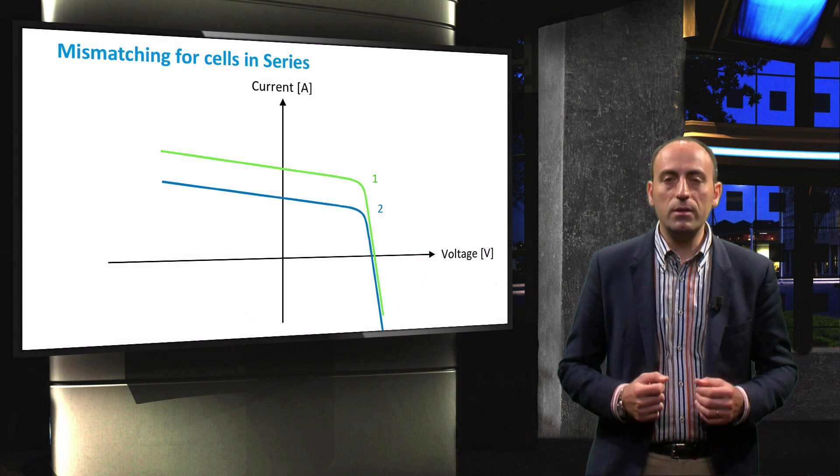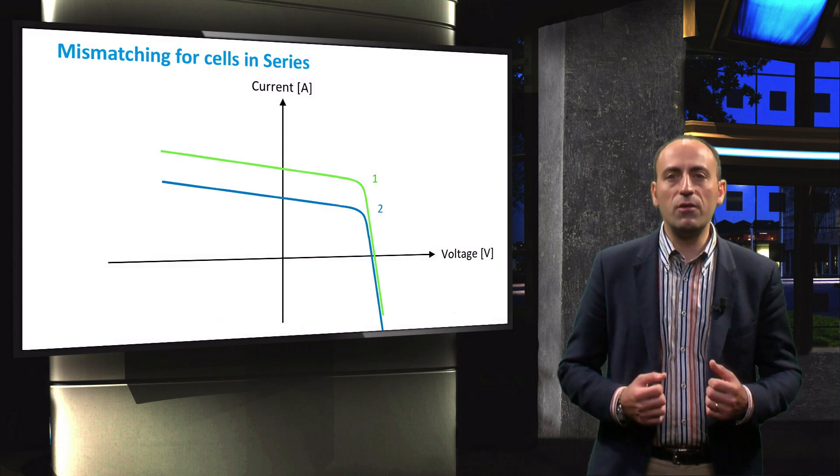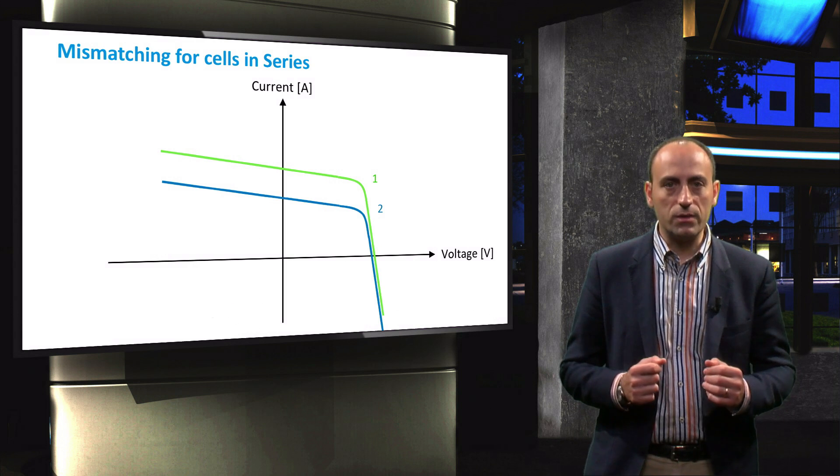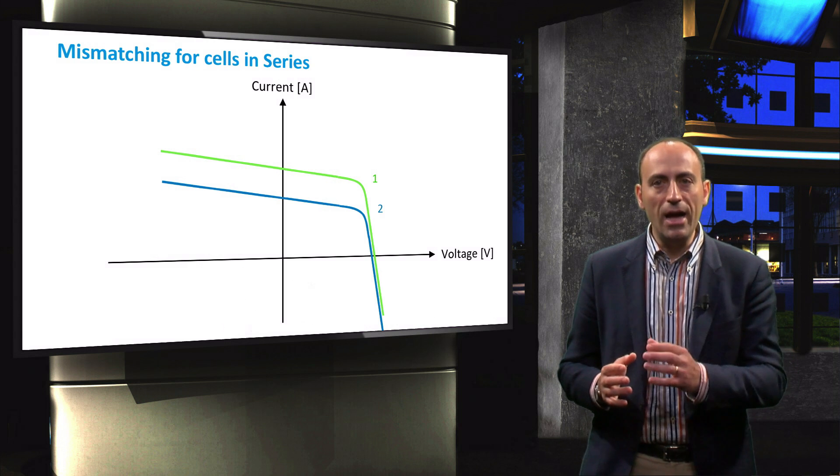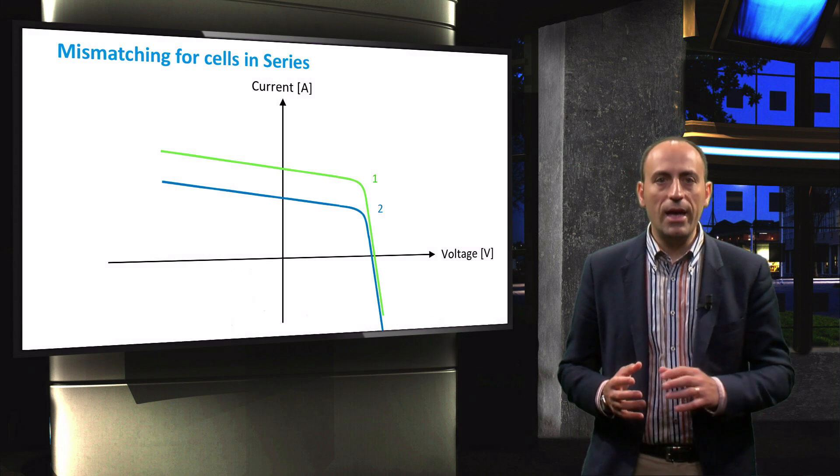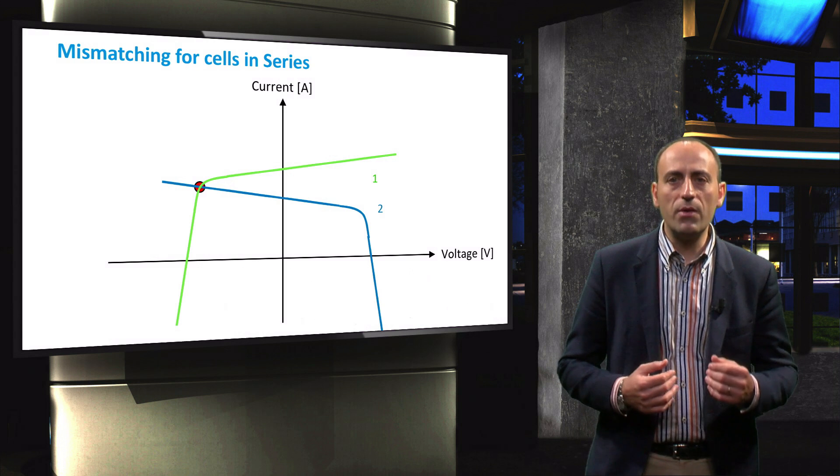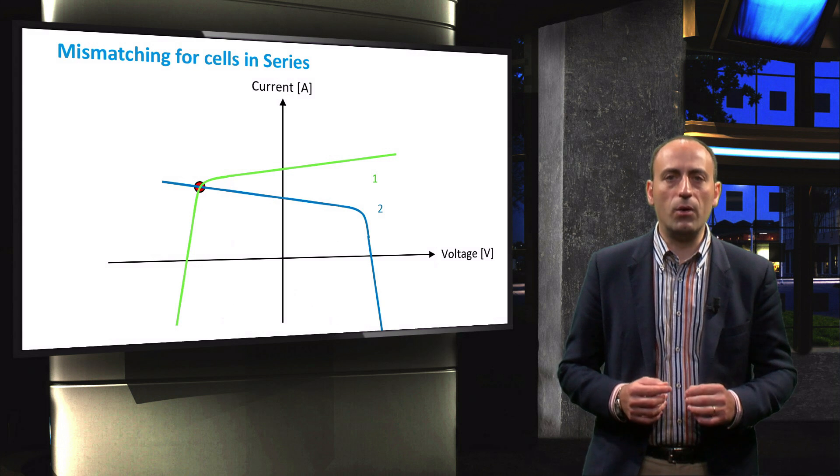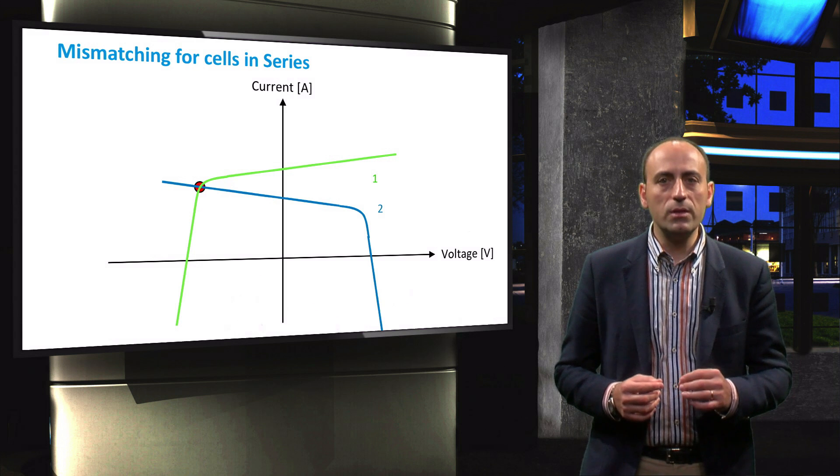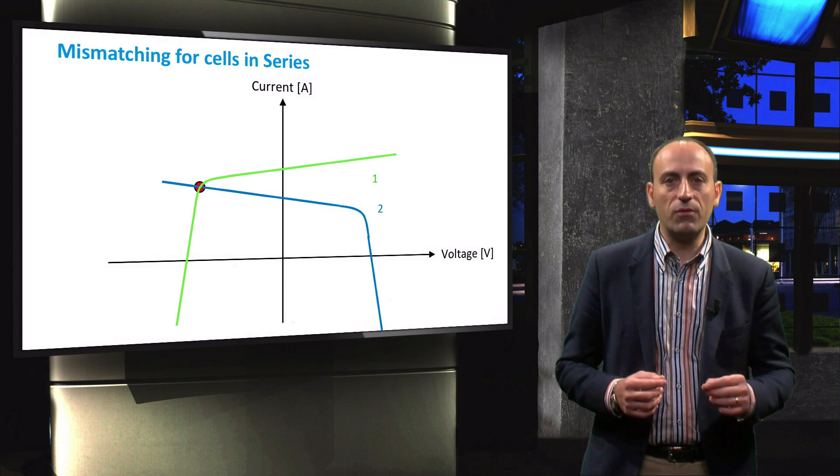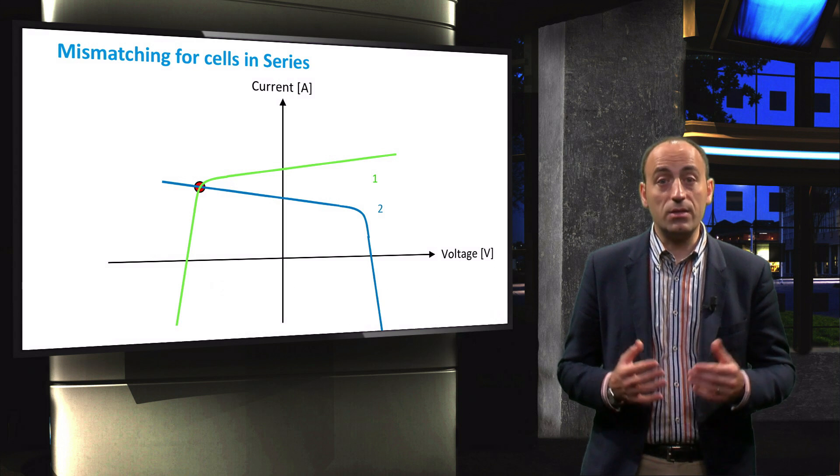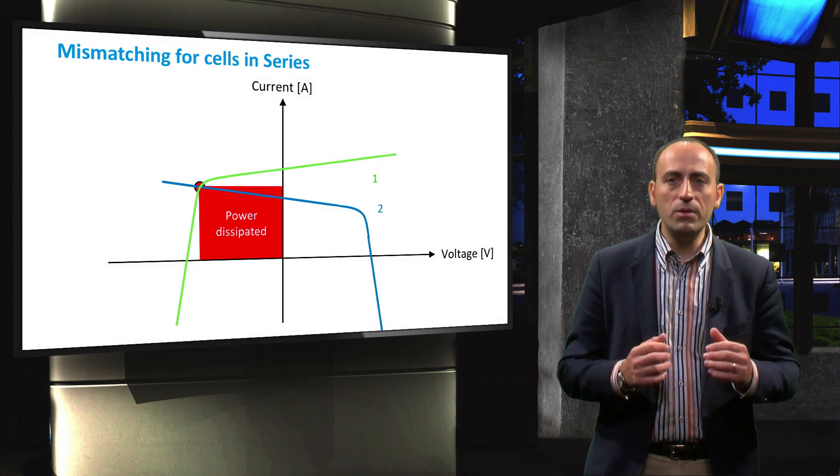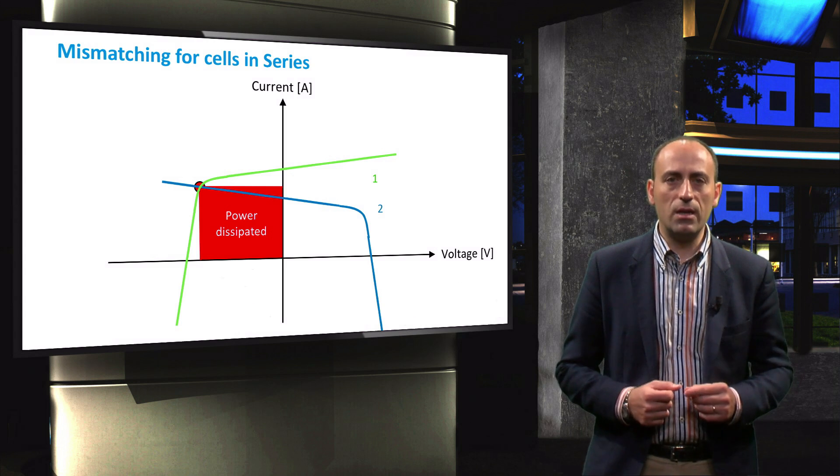The power dissipated in cell 2 can be graphically determined with the following approach. You start with the IV curves of both single cells. We then take the IV curve of the good cell 1 and mirror it with respect to the current axis. The intersection between the two IV curves is the operating point. The operating point is now located in the top left quadrant where cell 2 has a reverse bias. Therefore, the highlighted red area here is the power dissipated as heat in cell number 2.